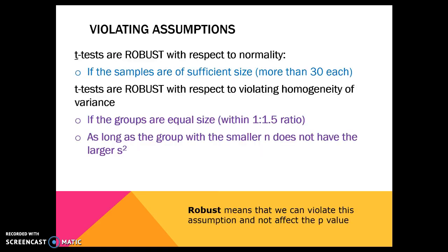We can violate a couple of these assumptions if we have to. If we violate them, we talk about robustness — what robust means is that we can violate the assumption and not affect the p-value. So we want the variable to be normal, to have that nice normal distribution. If it's not completely normal, we can say we hope so, but it's okay — we can violate that one.